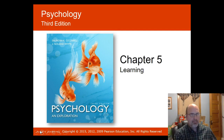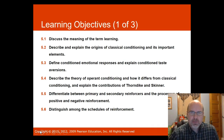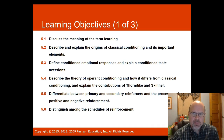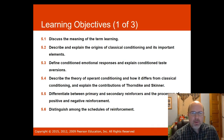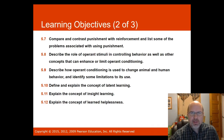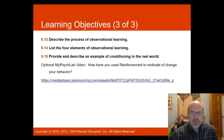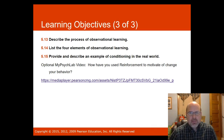Welcome to Chapter 5. The learning objectives are: discuss the meaning of learning, describe and explain the origins of classical conditioning, define conditioned emotional responses, describe operant conditioning and how it differs from classical conditioning, look at the contributions of Thorndike and Skinner, differentiate between primary and secondary reinforcers, distinguish among schedules of reinforcement, compare and contrast punishment, and describe the role of operant stimuli.